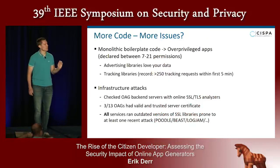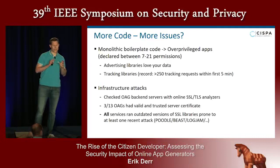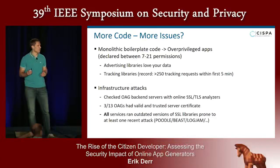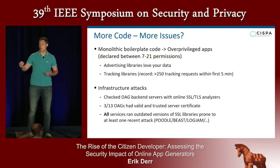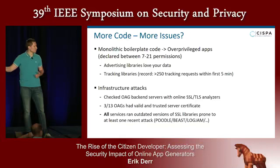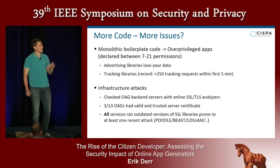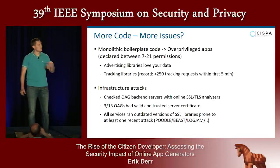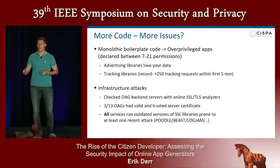Another problem with monolithic boilerplate code is overprivileged apps. If you generate code for all possible modules, by definition you have to declare all permissions necessary to run any included code. In our analysis, this ranges between 7 and 21 permissions. When you add advertisement or tracking libraries, this becomes a privacy nightmare, because past incidents have shown that such libraries probe for permissions of their host app, and if available, access sensitive data and exfiltrate it to remote services.